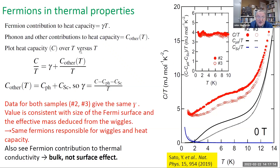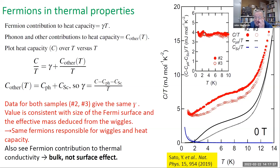We can also look for fermions in thermal properties. There's a contribution to the heat capacity proportional to temperature. If you plot C/T, the heat capacity over temperature, this comes out as a constant gamma. Here are the other contributions as curves, the experimental data as dots, and the inset shows the extracted gamma — it is a constant. So we see a fermion contribution to the heat capacity, but this thing is still an insulator. We're getting strong evidence for mobile fermions in this material.